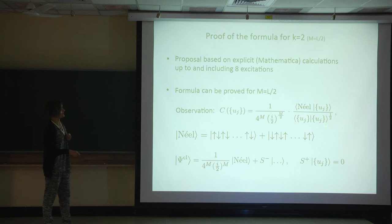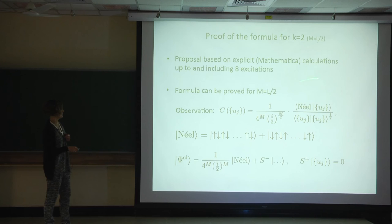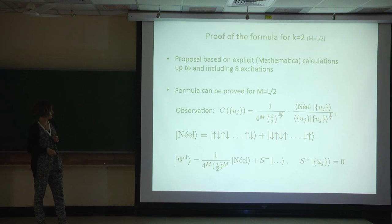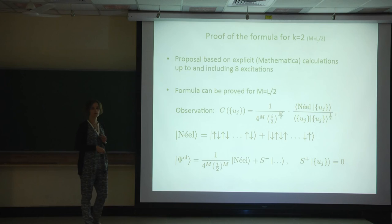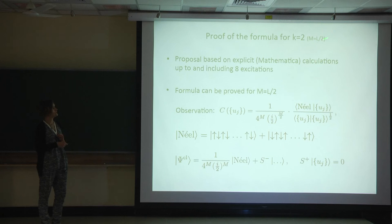Our formula is actually true also for M not equal to L/2, though in that case our state is not equal to the Néel state. For M = L/2 the defect state is cohomologically equivalent to the Néel state: it can be written as some constant times the Néel state, plus a lowering operator acting on another state. Since Bethe eigenstates are highest weight states, that second part does not contribute to the overlap. Therefore we have a proof of our determinant formula in the case M = L/2, but only in that case.